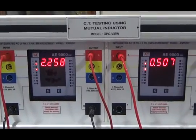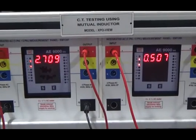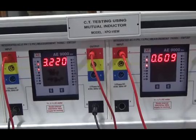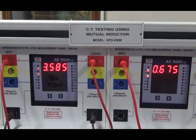At the same time observe on second meter. The second meter will show 1A when 5A current flows through the first meter.